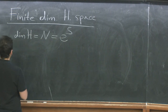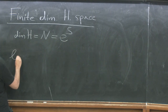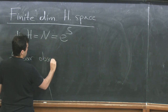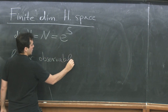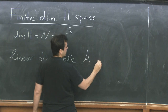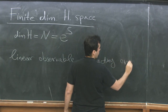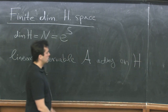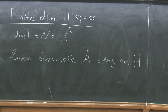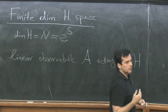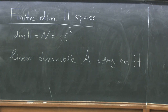We then consider a linear observable — a linear operator A — acting on this Hilbert space. This Hilbert space has many different pure states, and what we want to understand is in what sense the expectation value of this operator differs among the different pure states.